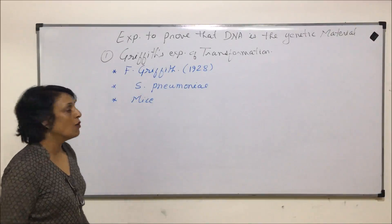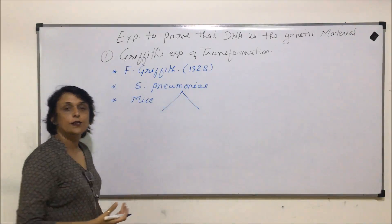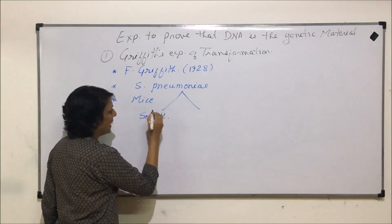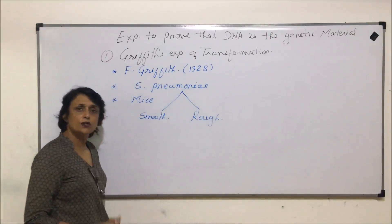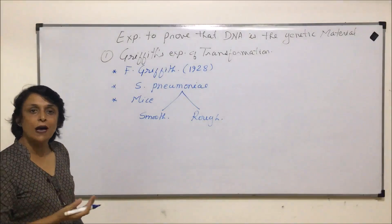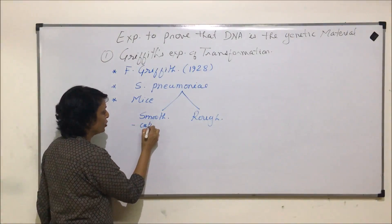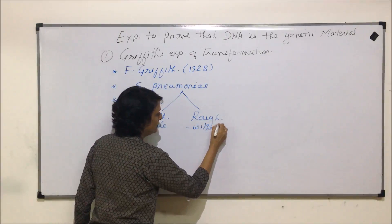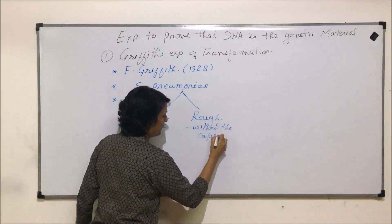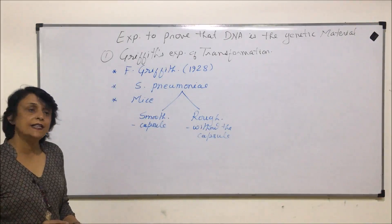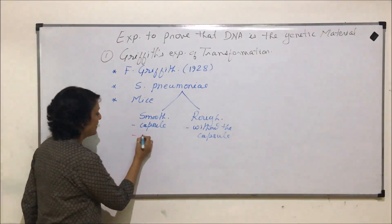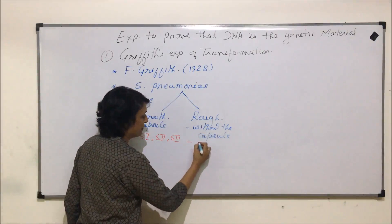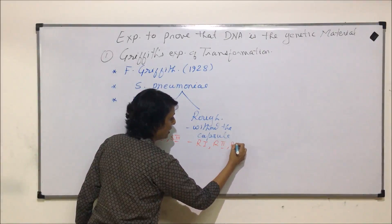This Streptococcus pneumoniae occurs in two different types of forms. One is known as the smooth variety and the other is called the rough variety or strain. As the name tells us, smooth has a smooth outer surface because of a capsule present around their cell or body. Rough is without the capsule. These smooth and rough varieties also occur in various strains — S1, S2, S3, and so on; similarly R1, R2, R3 and so on.